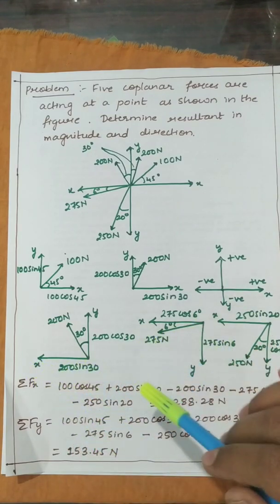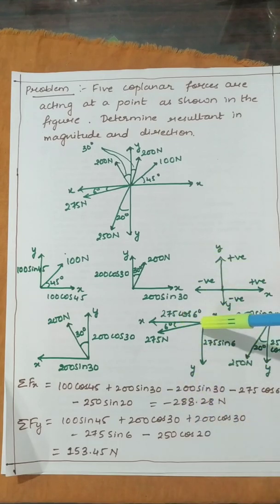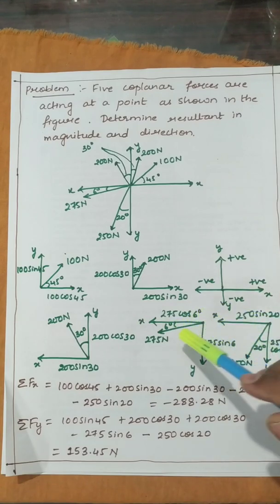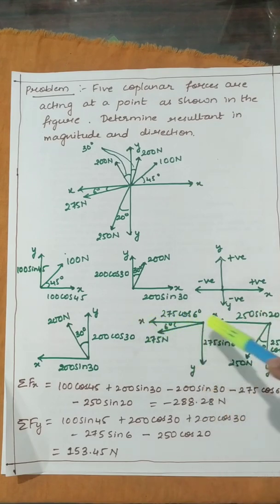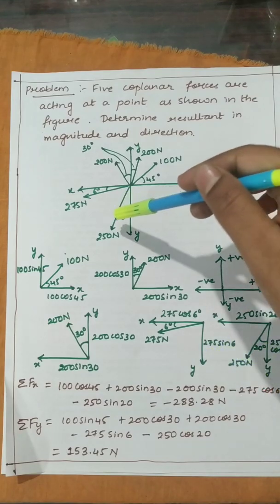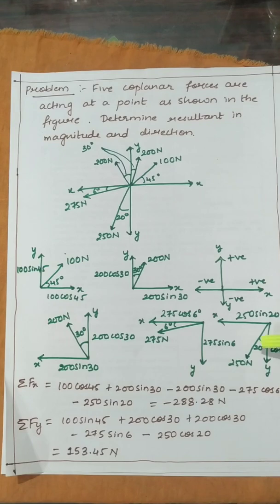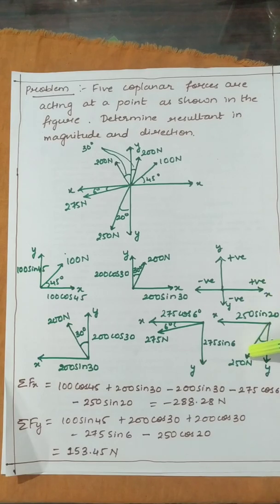The 275 N force makes an angle of 6 degrees with the x direction, so the x-component is 275 cos 6 and the y-component is 275 sin 6. The last force, 250 N, makes an angle of 20 degrees with the y direction, giving a y-component of 250 cos 20 and an x-component of 250 sin 20. Now we have resolved all five forces in x and y directions.